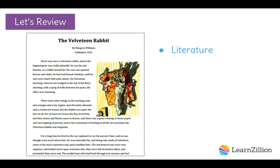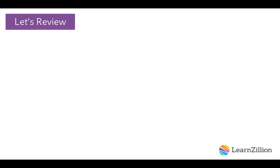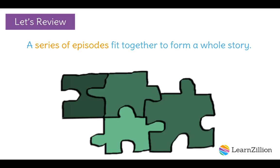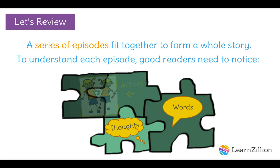This is a fictional story about the secret lives of toys, written by a woman named Marjorie Williams. It was originally published in 1922. Let's also review what we already know about stories. A series of episodes fit together to form a whole story, kind of like a puzzle. In order to understand each episode, good readers need to notice specific details to help them understand how everything fits together. Good readers pay attention to a character's words, thoughts, and actions. This is how authors develop their characters throughout each episode.